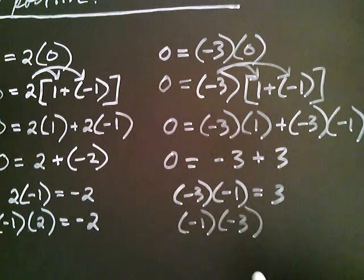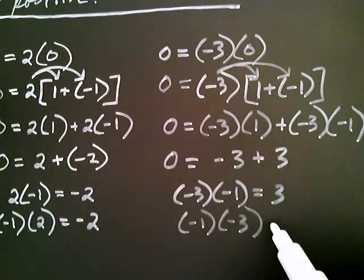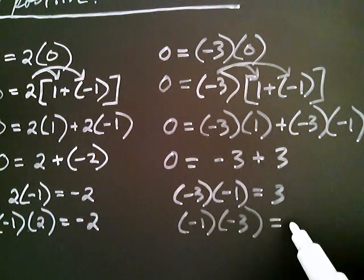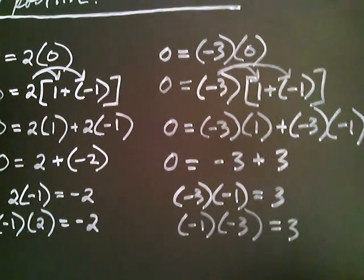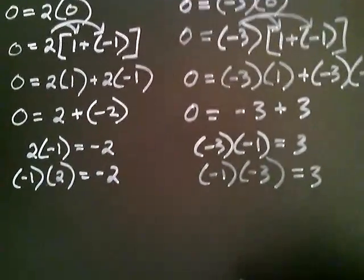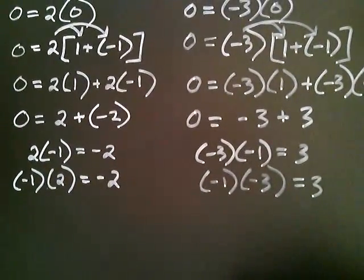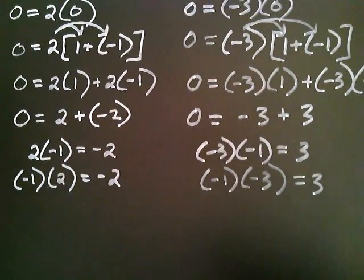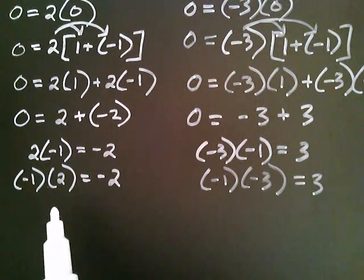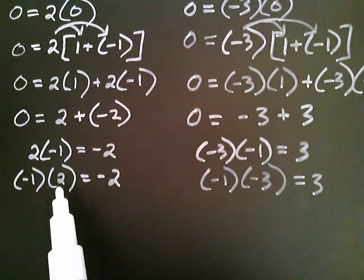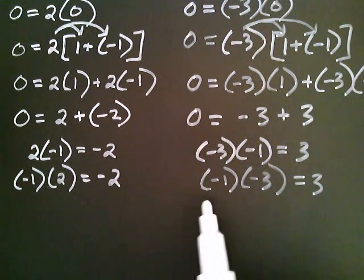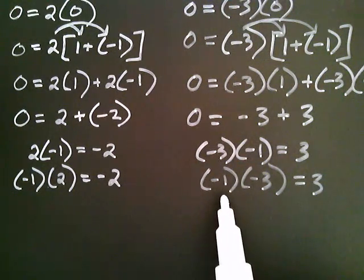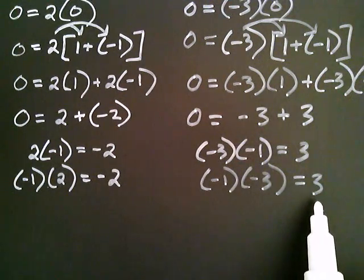And negative one times negative three is the same as positive three. At this stage, it's time for an observation. Remember what we did: negative one multiplied by two gave negative two, and negative one times negative three gives positive three.